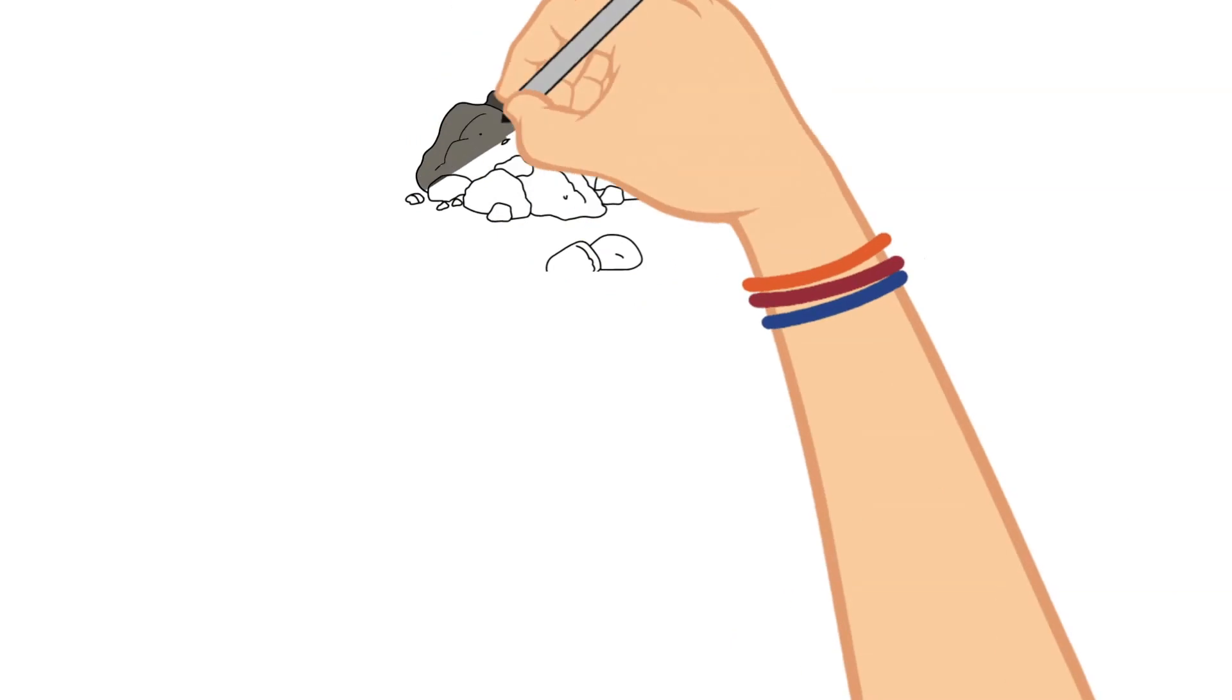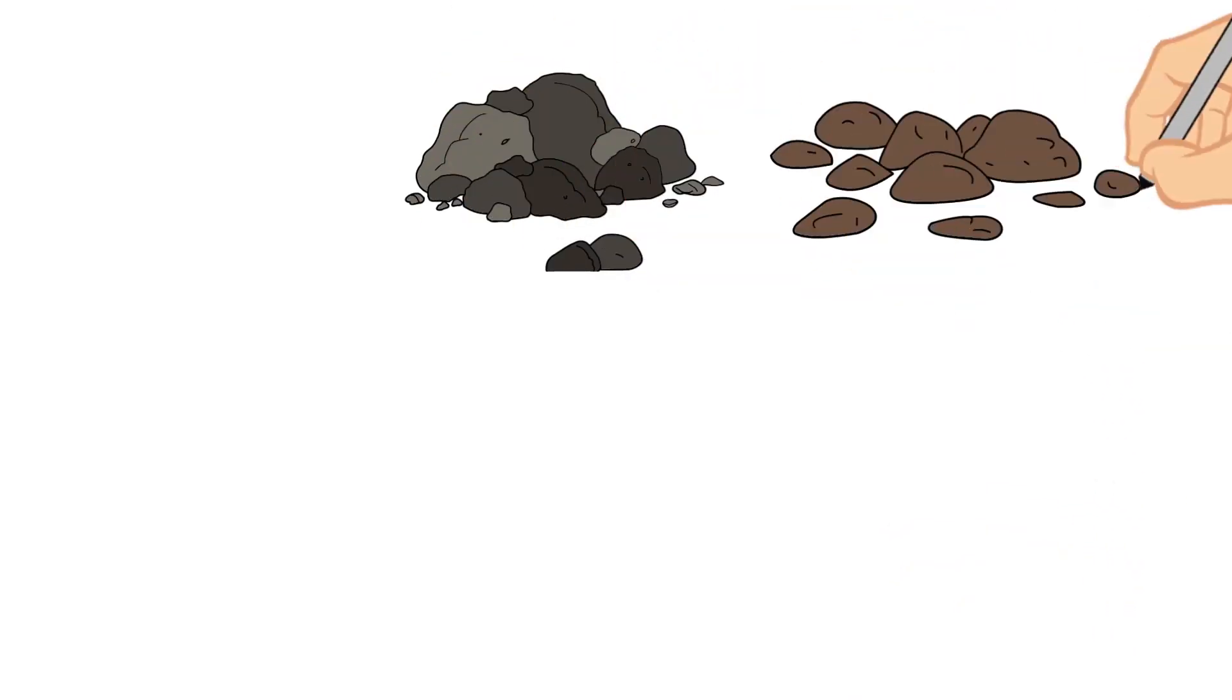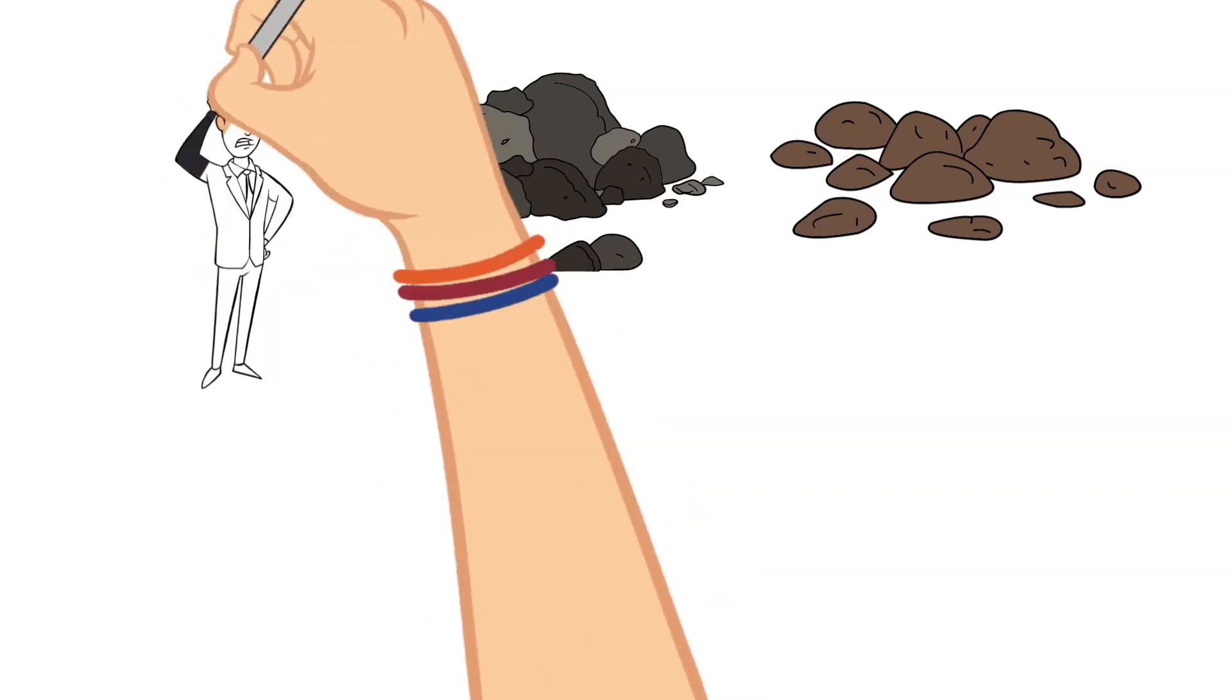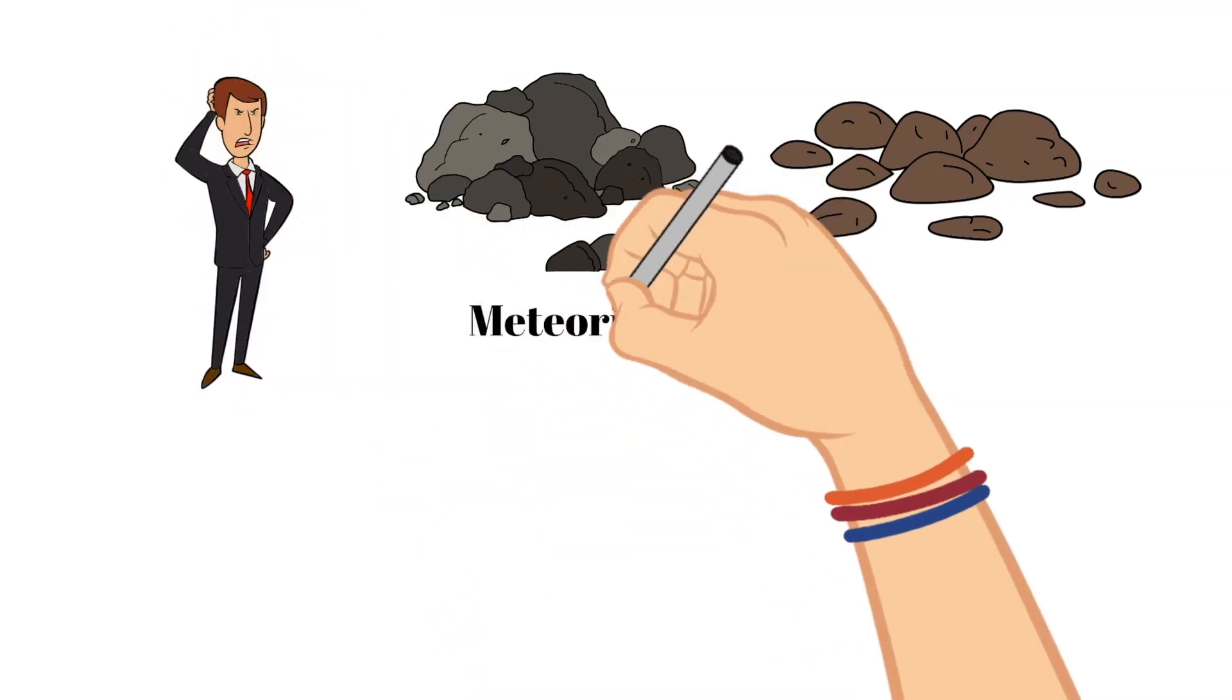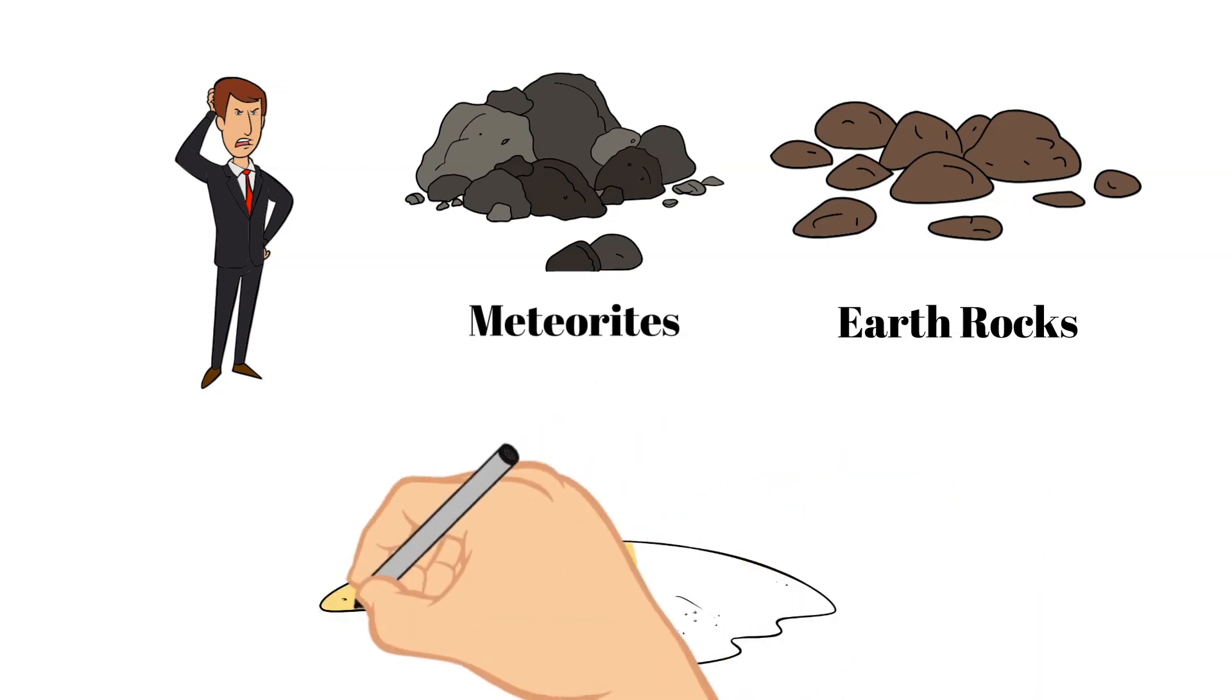Distinguishing these meteorites from an Earth rock is hard to do, but one place that this becomes easier is in a desert. This is where dark meteorites can stick out amongst the sand.